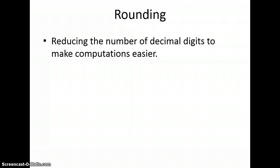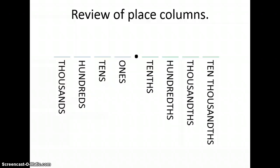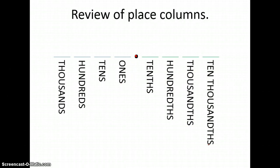Now let's talk about rounding. We do a lot of rounding when working with decimals because it reduces the number of decimal digits and helps make computations easier. Let's quickly review place value. You have your decimal point, and to the left you have ones, tens, hundreds, thousands. The ones students get mixed up with often are the decimal place values: tenths, hundredths, thousandths, ten-thousandths. We're really not going to go past that, but when talking about decimals in class you will need to use these proper terms. If you need to pause the video and write down these place values, that's a good idea.